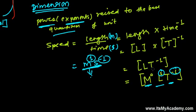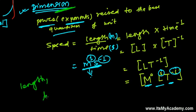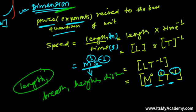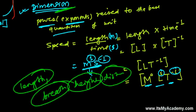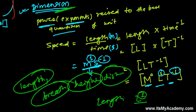When discussing dimension, always keep in mind that we do not talk about magnitude. It's about the quality of the physical quantity. Whether you say length, breadth, height, distance, or displacement — don't go to the magnitude. In terms of quality, they all mean length with power one, so they all have dimension one in length and zero in everything else. We focus on quality rather than quantity.